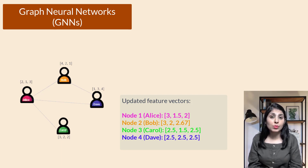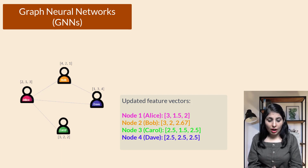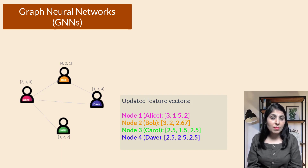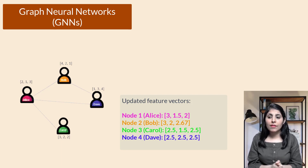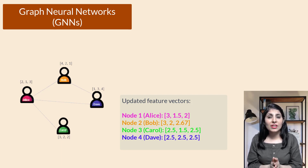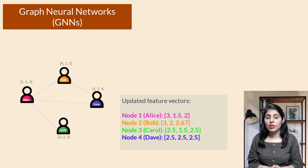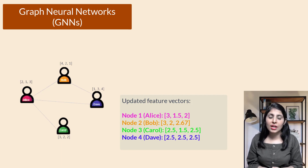So that's how graph neural networks work. In upcoming videos I'll cover the different types of graph neural networks and show practical implementations as well. I hope this video was helpful — if you have any queries, please comment below, and if you liked the video, please like, share, and subscribe to my channel. Thank you for watching.